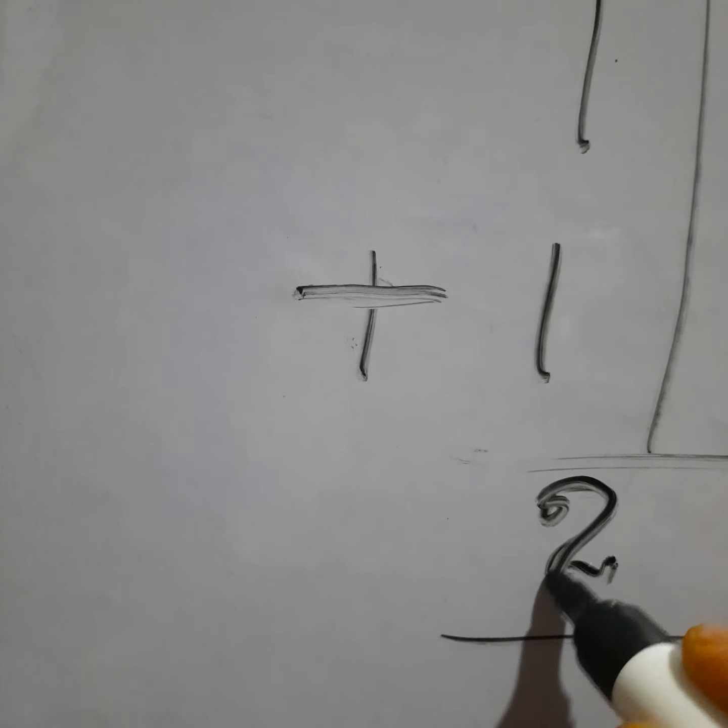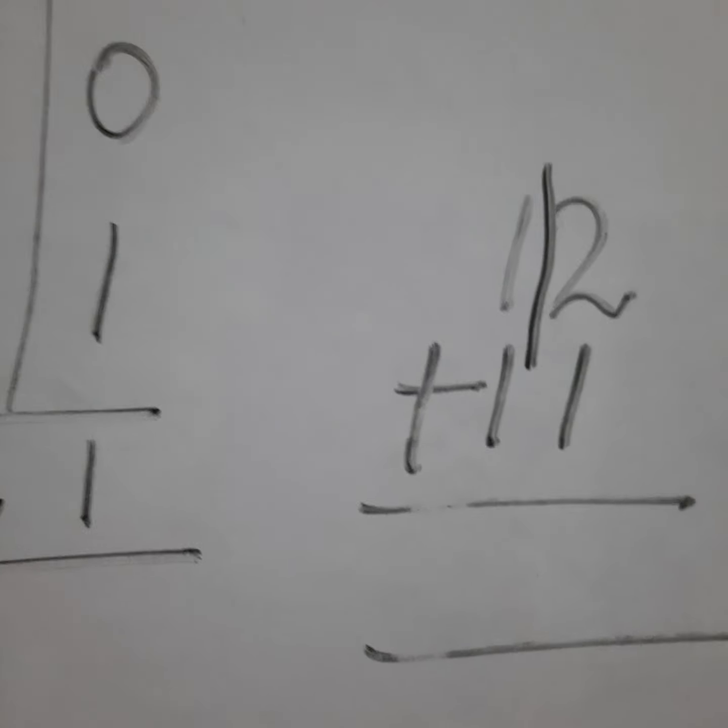This is how we do addition of two digit numbers. Now let's try 12 plus 11.